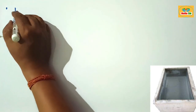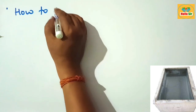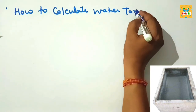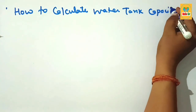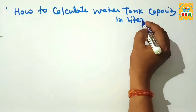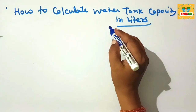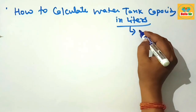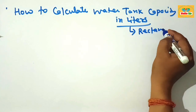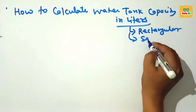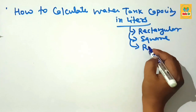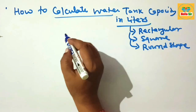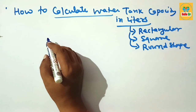Today in this video you will learn how to calculate water tank capacity in liters. You have to find out the volume of a water tank in liters. Water tanks come in different shapes, like rectangular shape, square shape, or round shape, and we need to find out the volume of water tank capacity in liters and how to calculate it.